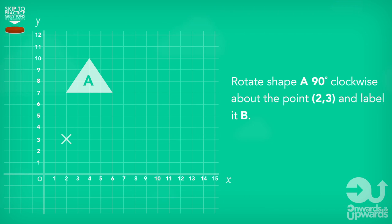An example of a type one question would be: rotate shape A 90 degrees clockwise about the point (2,3) and label it B. For people who get the point and think this is a no-brainer, it doesn't get any more complex than you think.